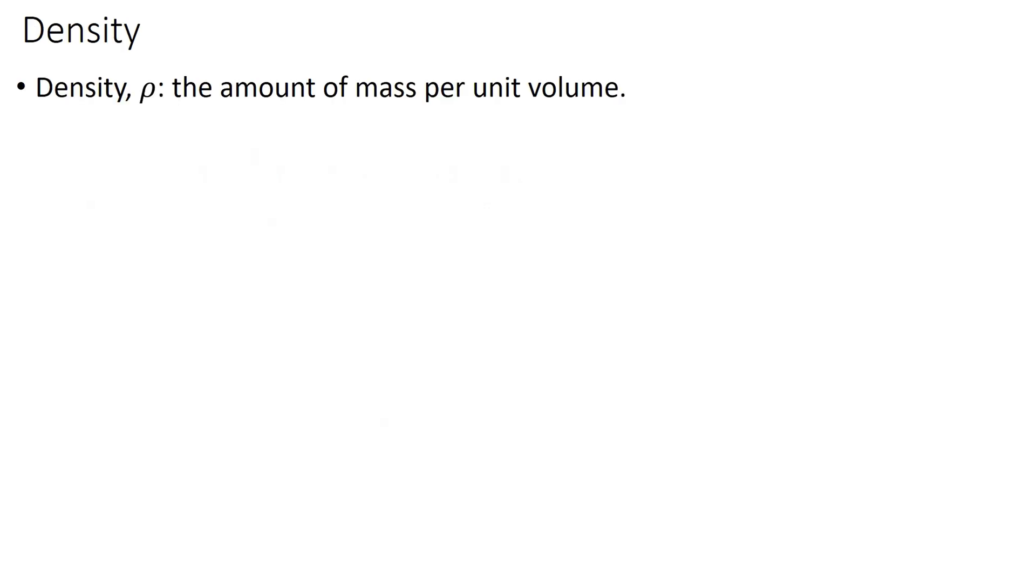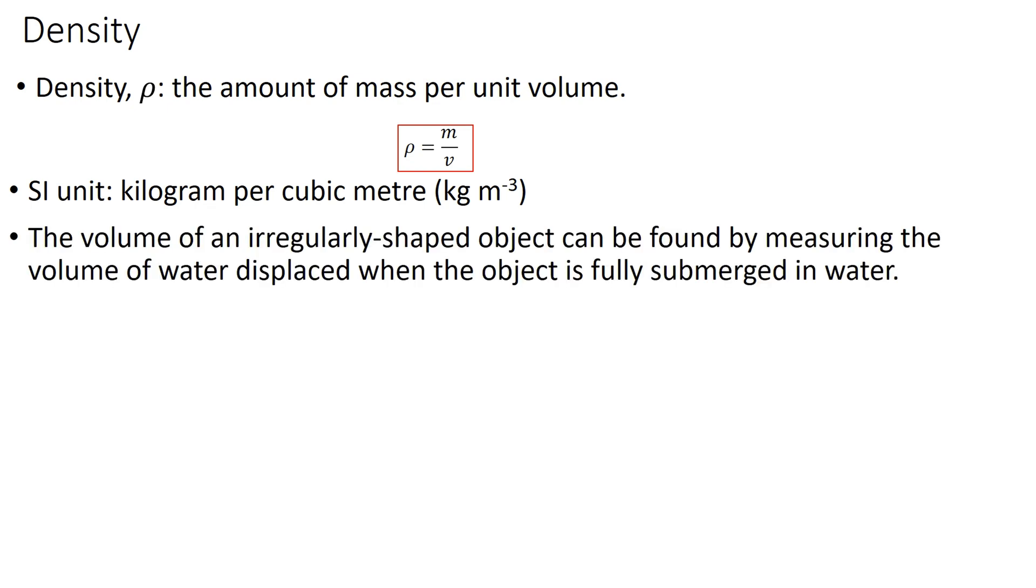Density, rho, is the amount of mass per unit volume. The formula for density is rho equals m over v. The SI unit for density is kilogram per cubic meter, symbol kg m to the power of negative 3. The volume of an irregular shaped object can be found by measuring the volume of water displaced when the object is fully submerged in water.